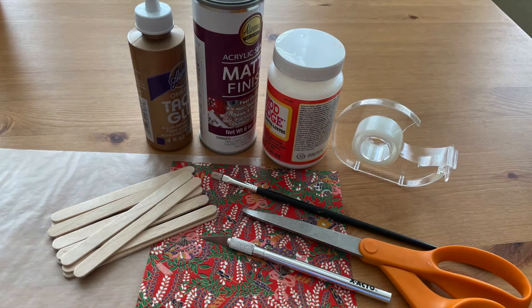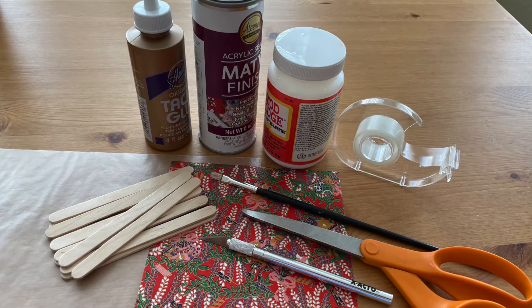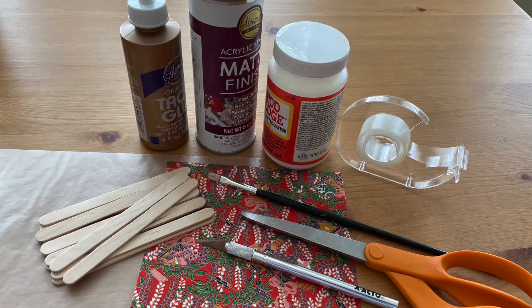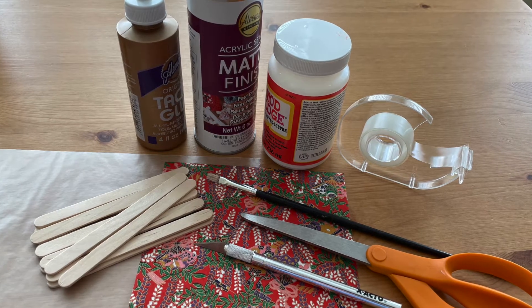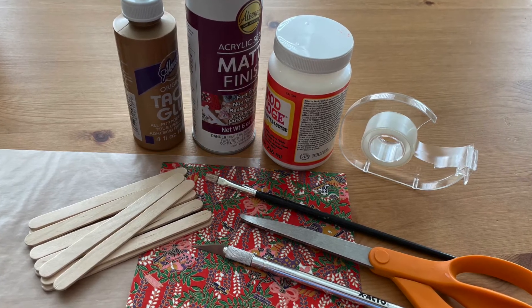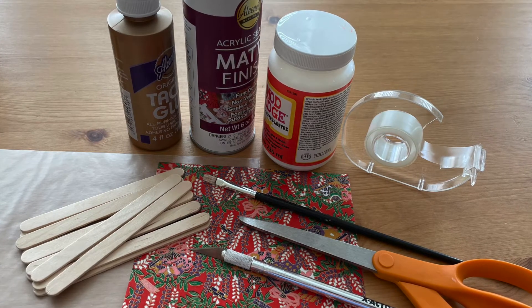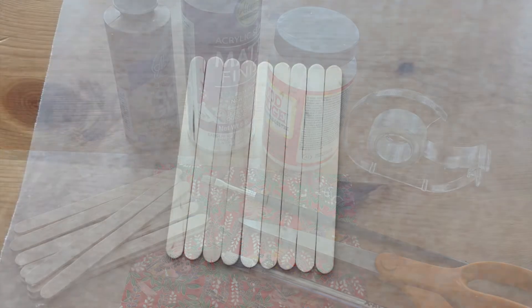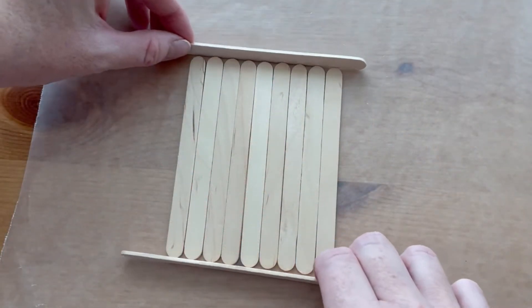For this project you will need 12 craft sticks, the popsicle stick size, origami paper, tape, scissors, paintbrush, mod podge, an exacto knife, glue, varnish, and something to protect your work surface. Lay nine of the sticks side by side and make sure that each side is straight.